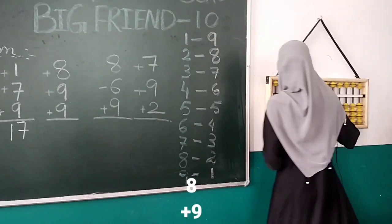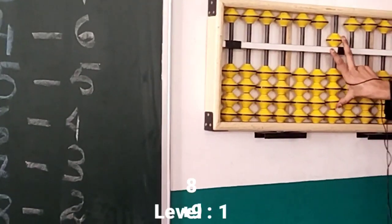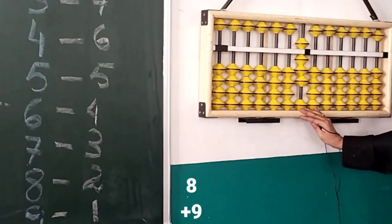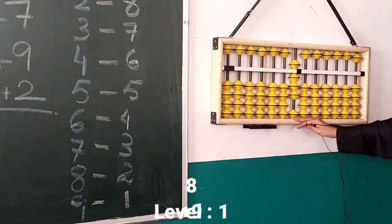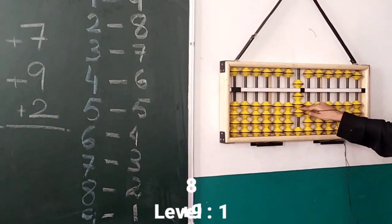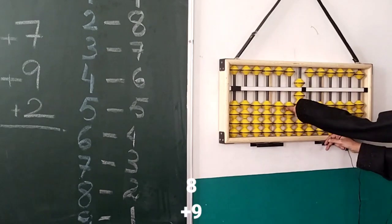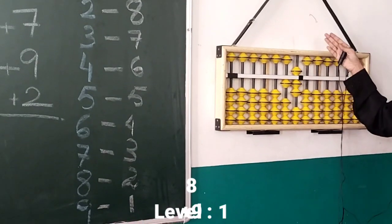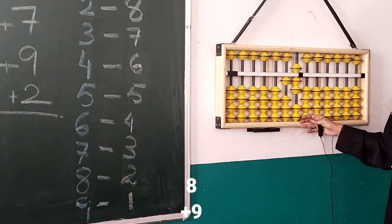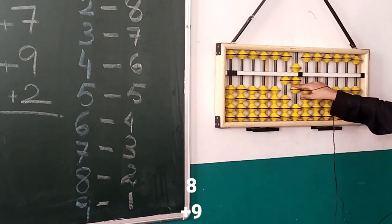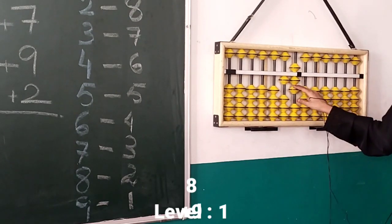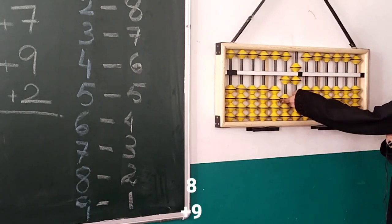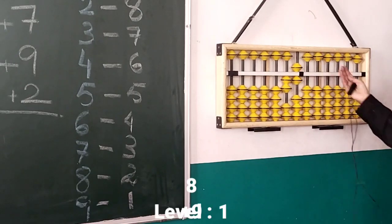For eight plus nine plus nine, we first draw eight with pinch, then for nine we don't have enough beads, so we go to Big Friend. He helps by cutting nine's best friend's contact. Big Friend comes to help. Again for the second nine, we don't have enough beads, so we ask Big Friend again. He helps only on condition nine cuts friendship with his best friend, and ten comes to help. Our answer is twenty-six.